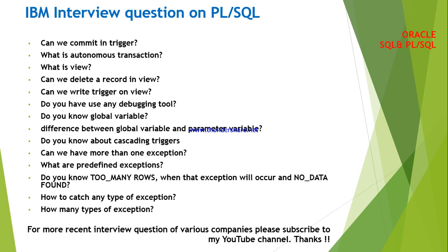The first question is: can we commit in a trigger? The answer is no, because a trigger is not a main transaction — it is a part of a larger transaction, so we cannot commit inside a trigger. What is an autonomous transaction?